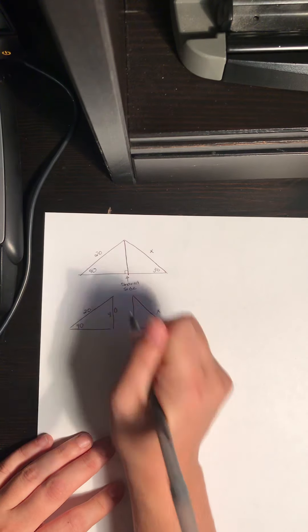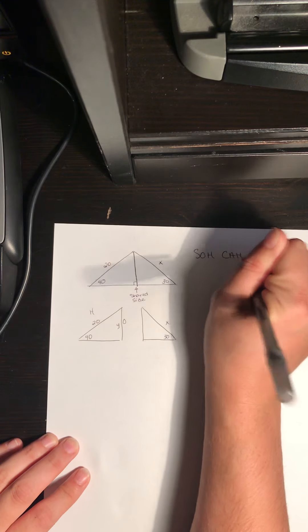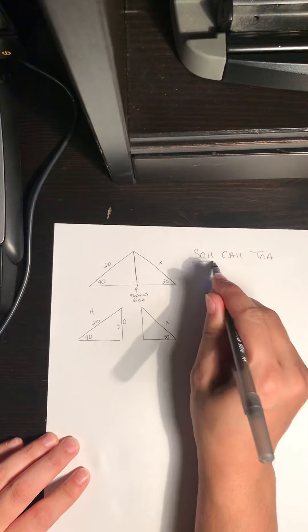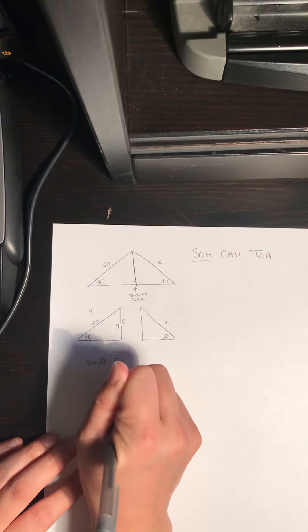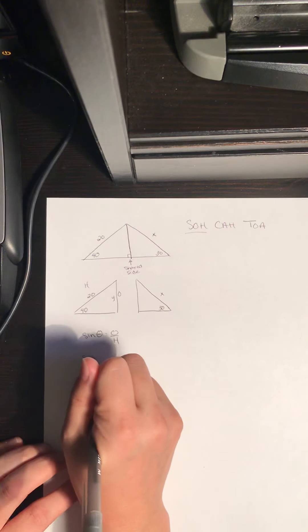So label your sides and then write out your ratio. So sine theta equals O over H. I'm gonna fill in what I know.